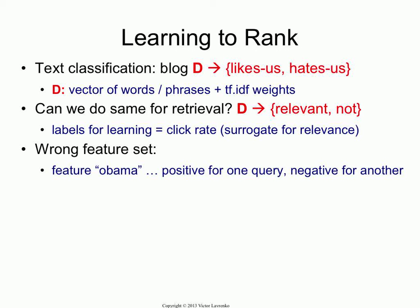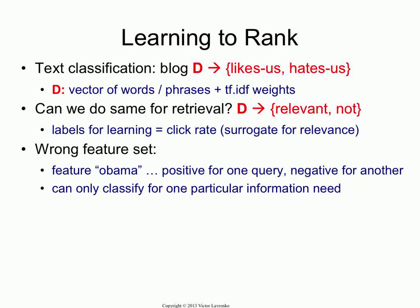Something like 'Obama' would be an indicator of relevance for one query, but it would indicate non-relevance for another query. So you could only classify documents for one particular information need, for one particular query. Are you going to learn a separate classifier for every query out there? Good luck. Even if you're Google, you can't do that. That's an ill-posed problem — too many queries, too many classes, too little training data, even on the web.